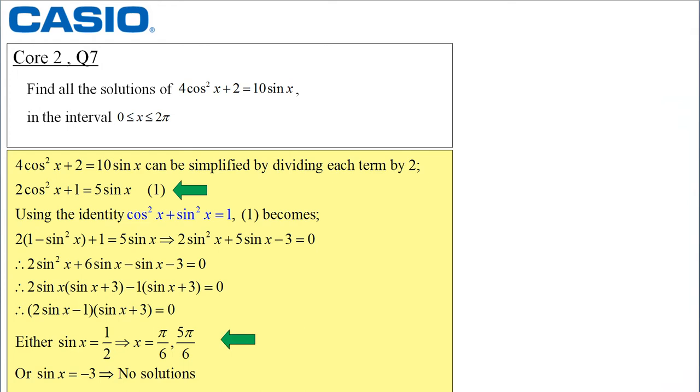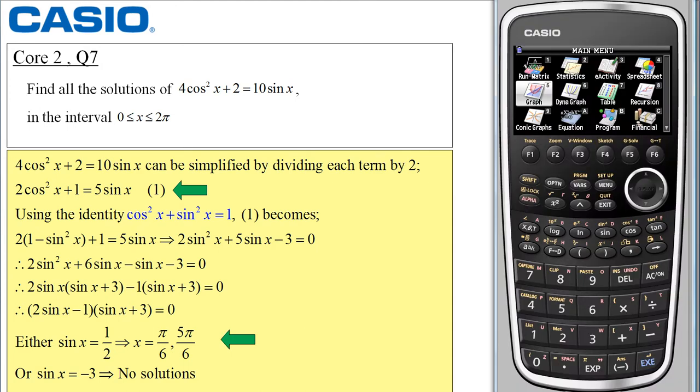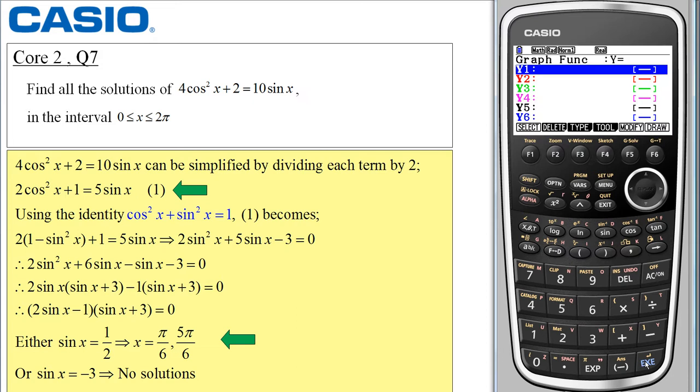If I use the Casio graphical calculator and I select graph function menu which is option 5 then I'm going to plot each of these functions.